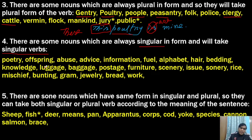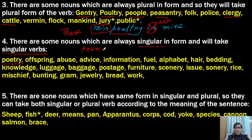Poetry is actually a branch — if you belong to the English background, poetry is basically a part; one is ballad, one is poetry, one is sonnet and all that. In the same way, prose is a division. So poetry, offspring, abuse, advice, and information — all these types of words are actually uncountable nouns and they would never take S or ES with them.